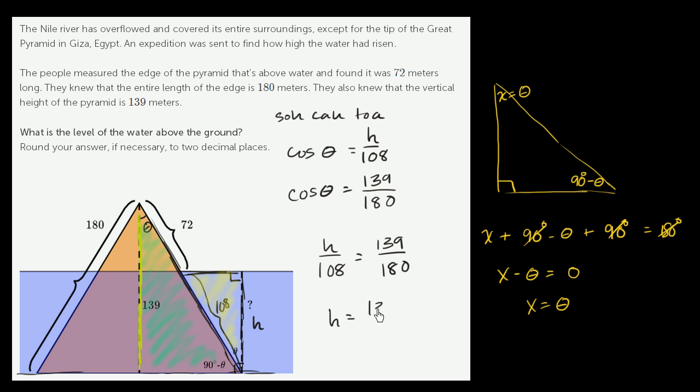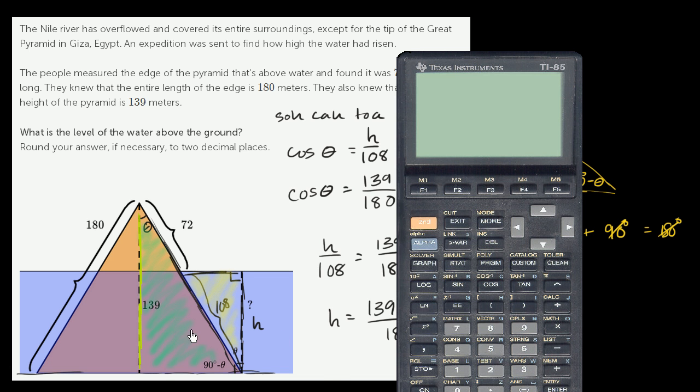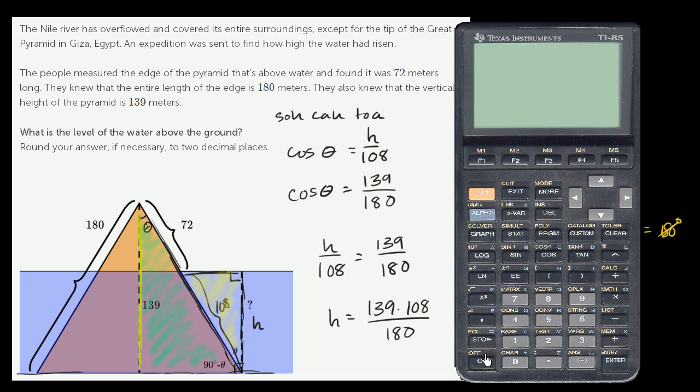So h is equal to 139 times 108 over 180. Let's get our calculator out and calculate that. That is going to be 139 times 108 divided by 180, which gets us to 83.4 meters.